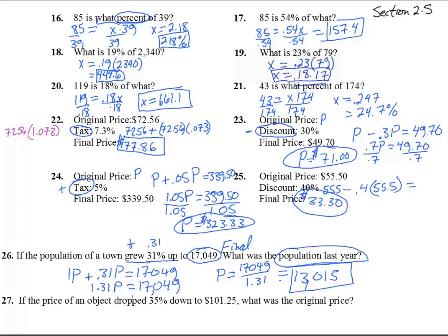Number 27, the price of an object dropped 35%, that means we're going to have a minus .35 going on here, down to, again, this is our final. So, we're going to have the original price, pick P, and it dropped down 35% of that price, down to 101.25. Now, 1 minus .35, it's not going to be 1.35, it's going to be .65P, equals 101.25.